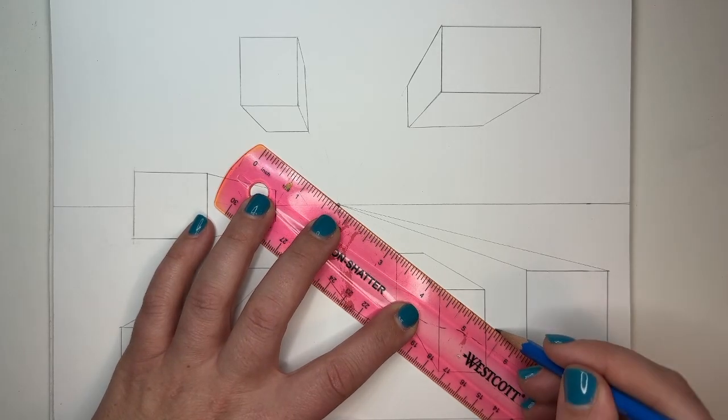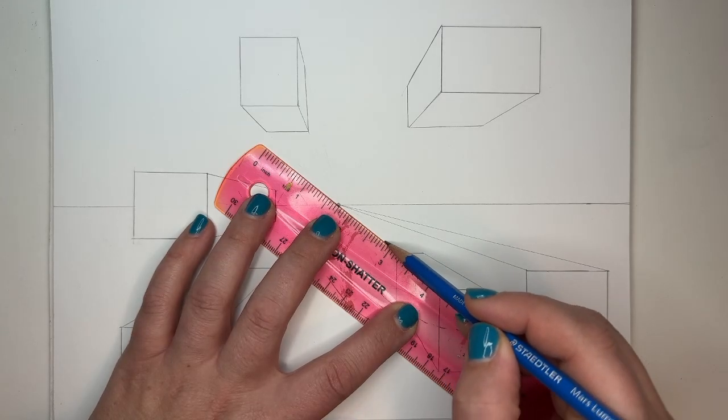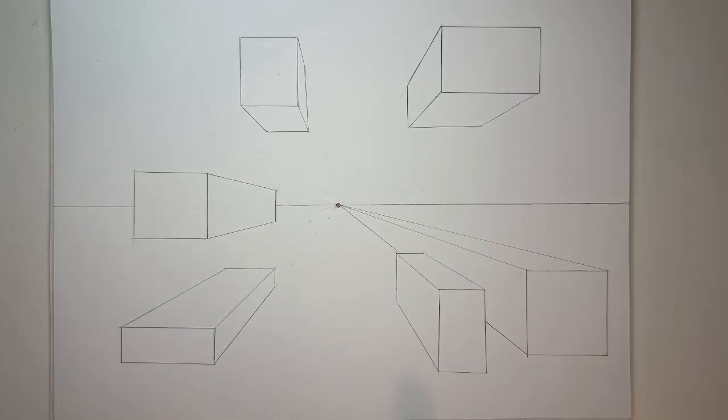So what I'll start doing is drawing the line. And when I reach the form, I stop and I can then continue on the other side, depending on how big I want this one to be. And now we have a little overlap happening.